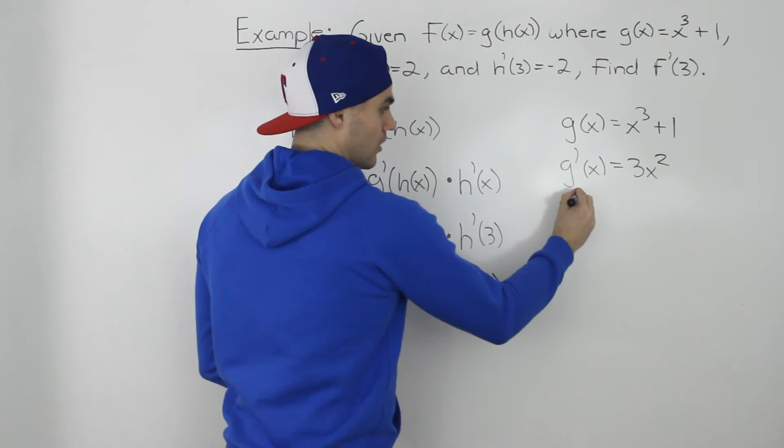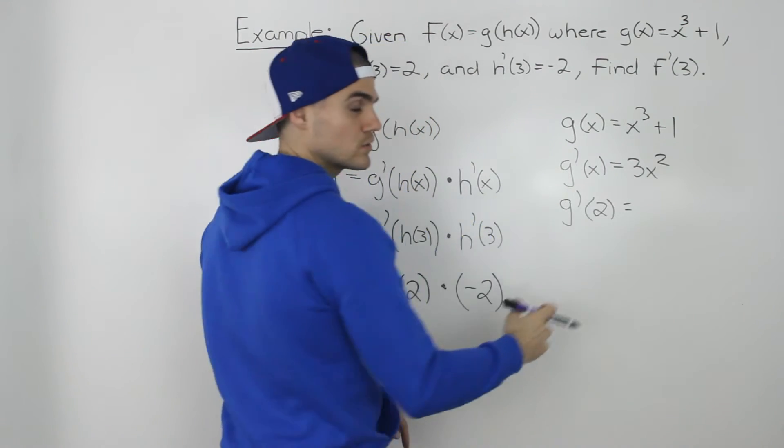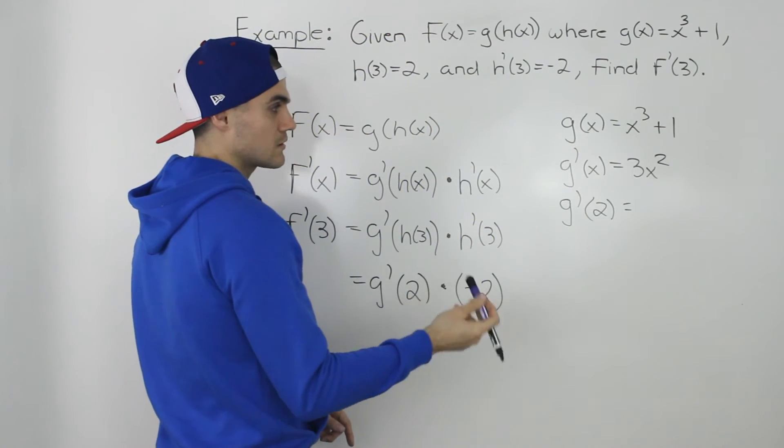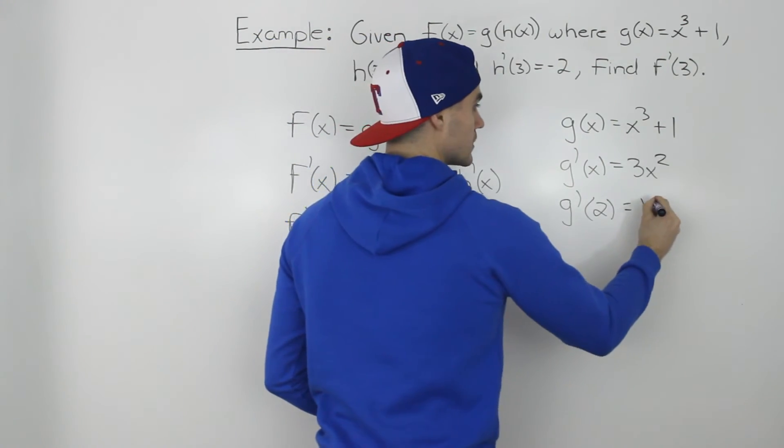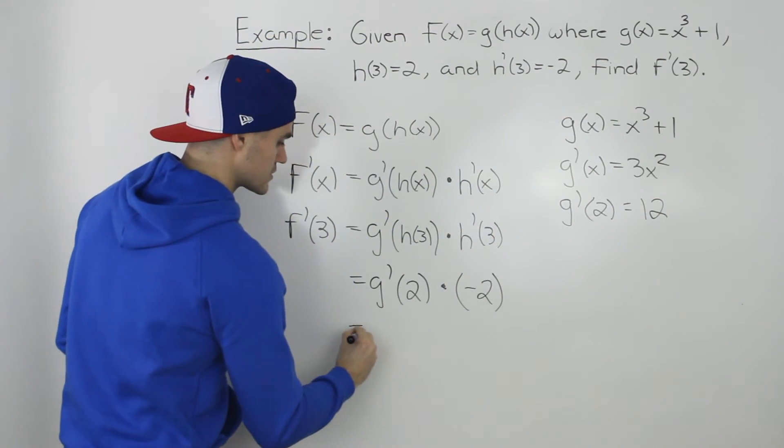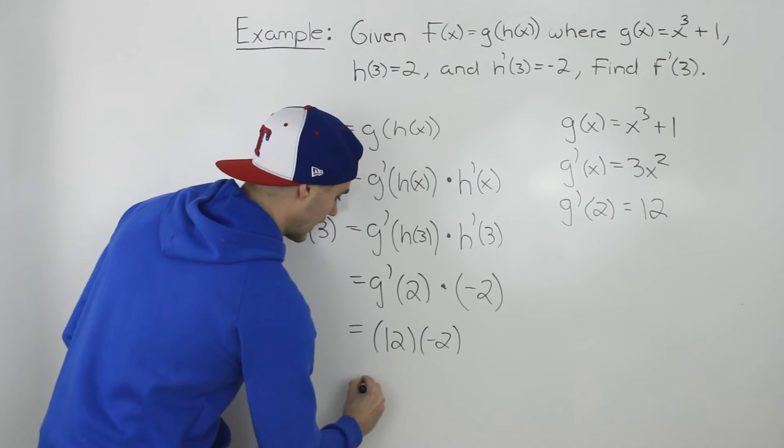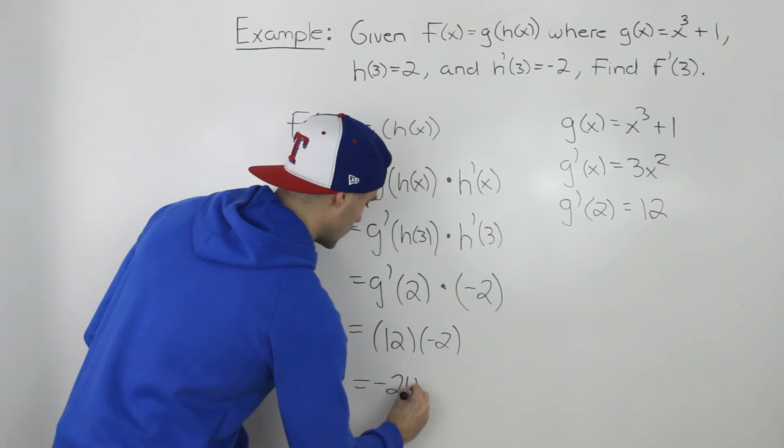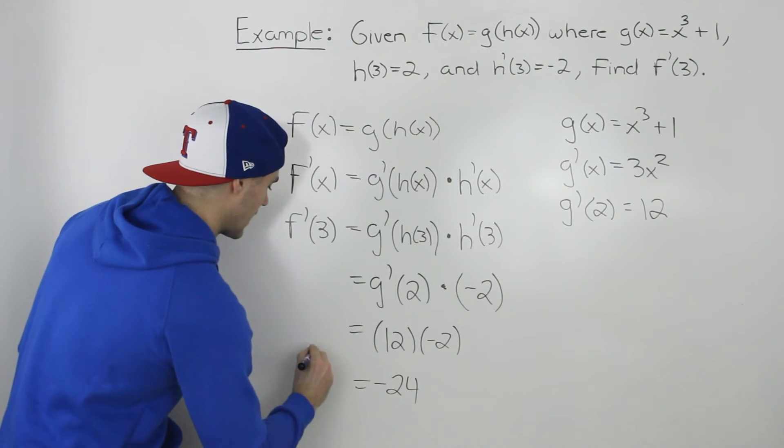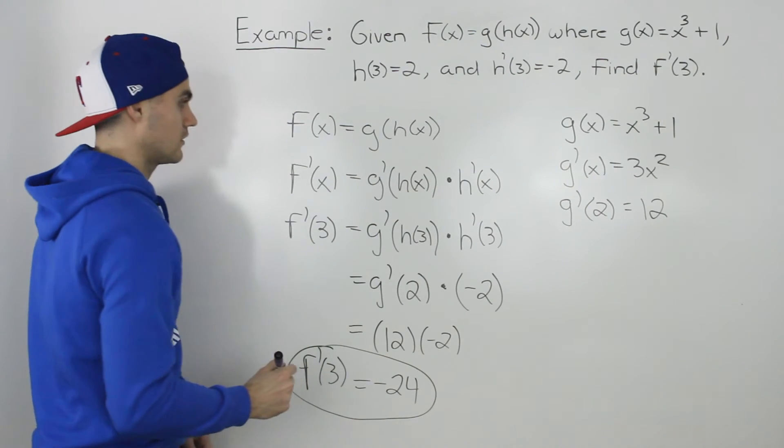Then g'(2), which is what we're finding, we would just plug in x = 2 in the derivative. So 3 × 2² gives us 12. So g'(2) = 12. We end up with 12 × -2, which gives us -24. That's what f'(3) is. That's our final answer.